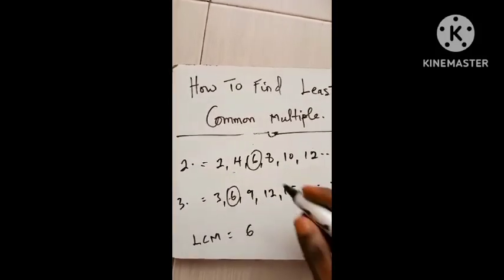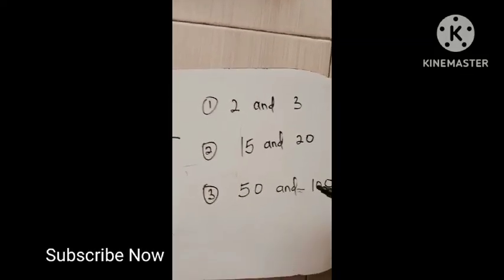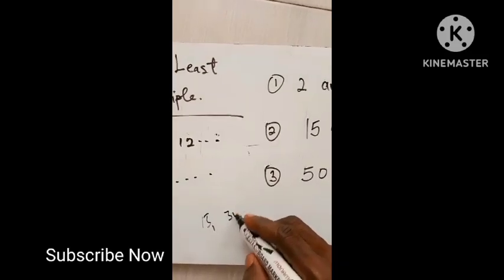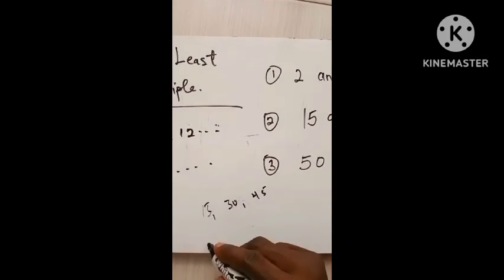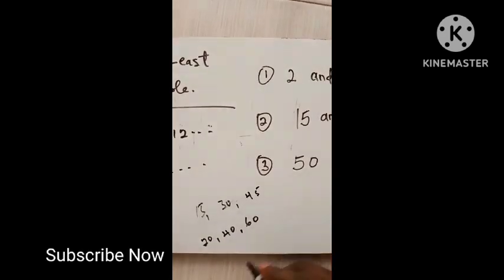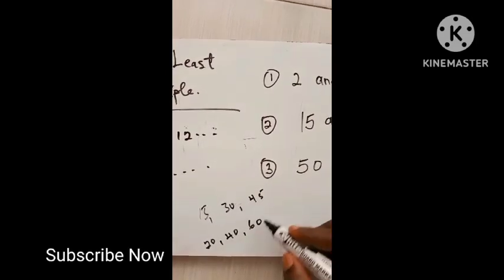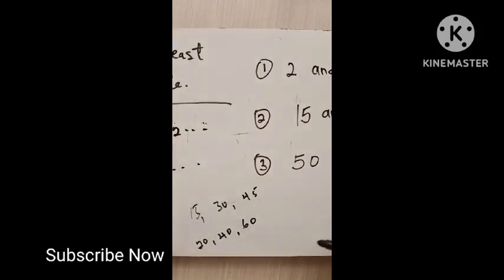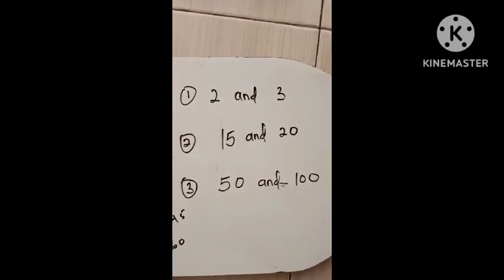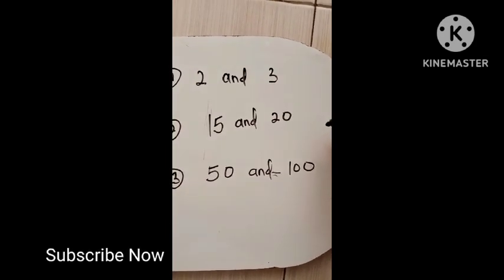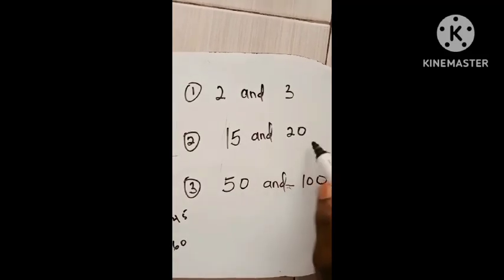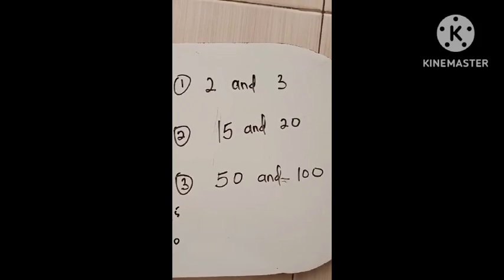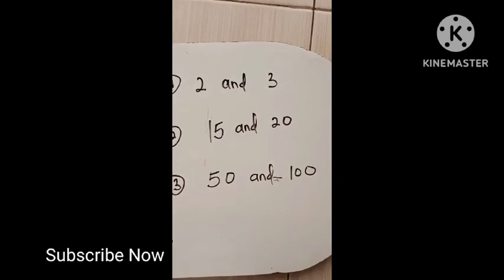For question two, we have 15 and 20. Using the listing method, the multiples of 15 are: 15, 30, 45, and so on. The multiples of 20 are: 20, 40, 60, and you keep on listing. I've listed the first three numbers here and haven't found any common multiple yet, so you have to keep going. This is where the prime factorization method can be more efficient.